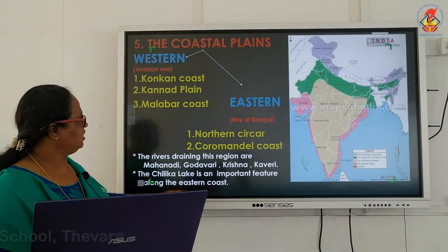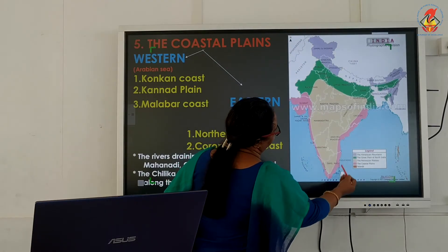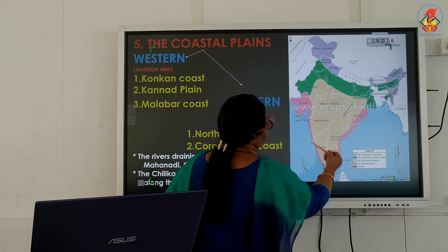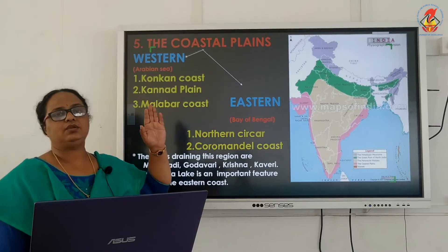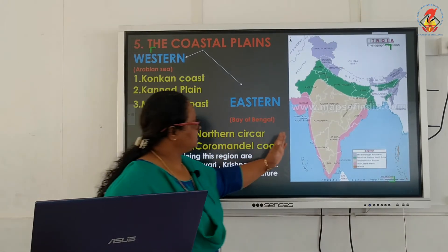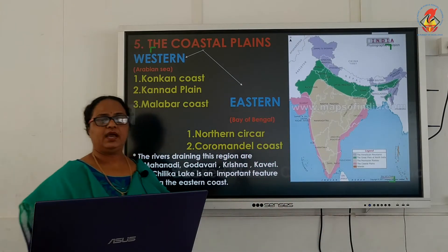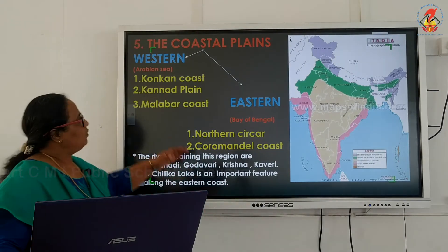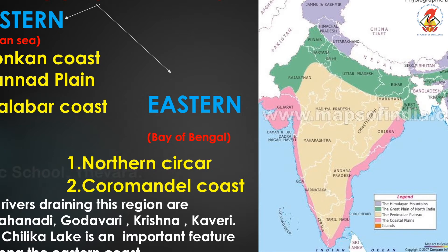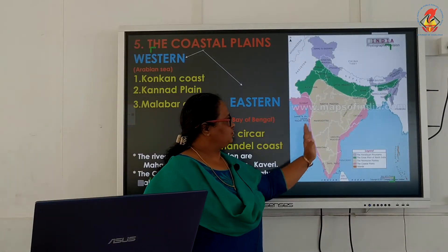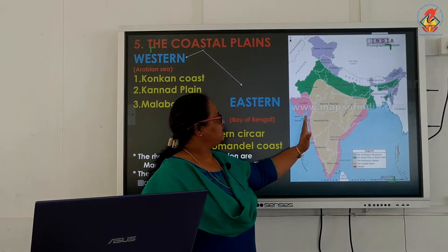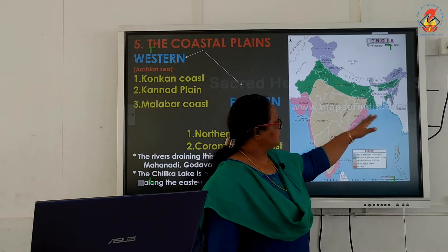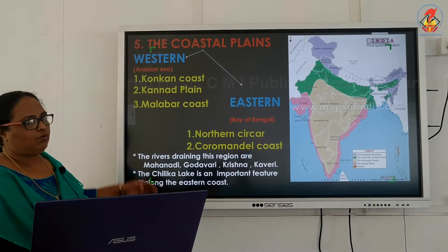The Indian coastal plains are divided into the western coastal plain, which lies along the Arabian Sea, and the eastern coastal plain, which lies along the Bay of Bengal. The western coastal plain is further divided into Konkan, Karnat (Kannada) plain, and Malabar coast.